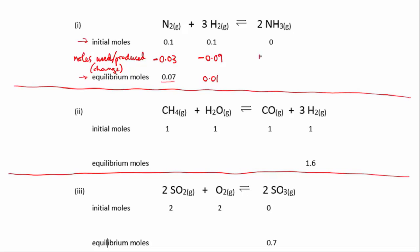So that's 0.06, and it was produced, so we'll make it positive, plus 0.06. So we started with none, we created 0.06 moles, so at equilibrium we have 0.06, and that's our table filled in.